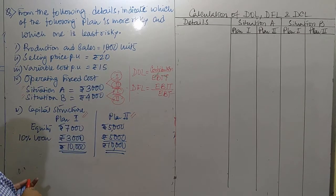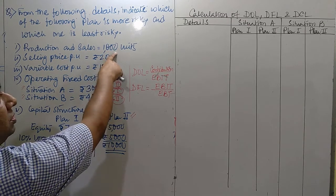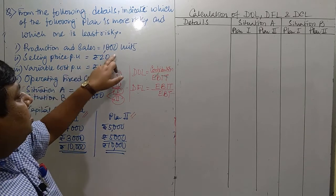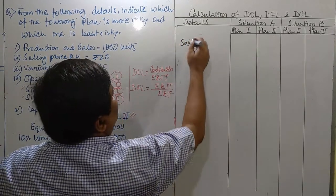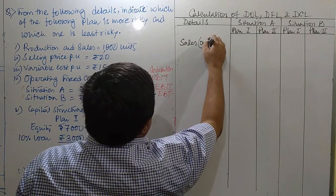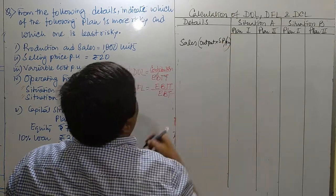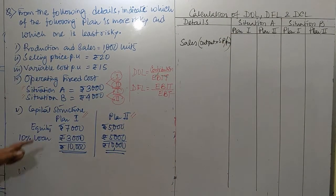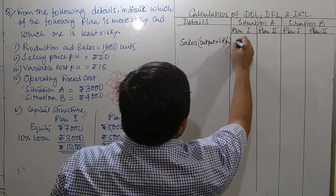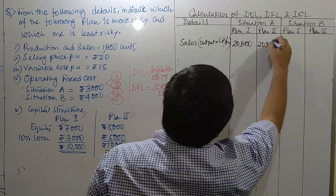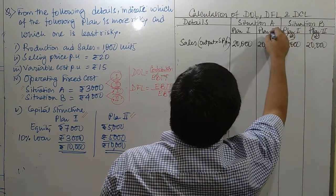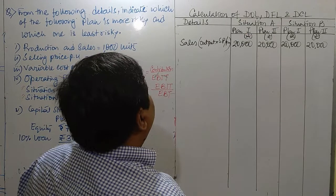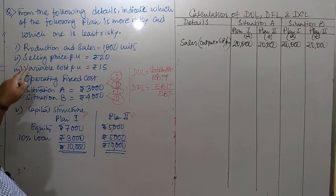First, production and sales is 1000 units, and selling price per unit is Rs. 20. So 1000 multiplied by 20 gives Rs. 20,000. The income statement starts with sales, which is output multiplied by selling price per unit. In each and every column it will come to Rs. 20,000.